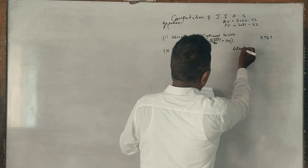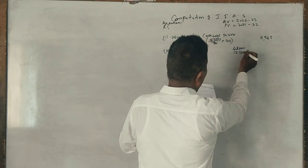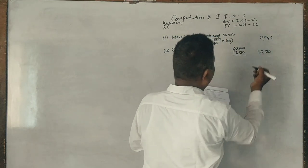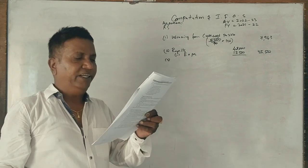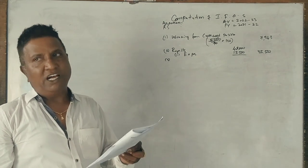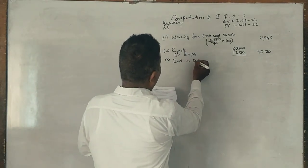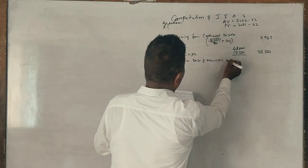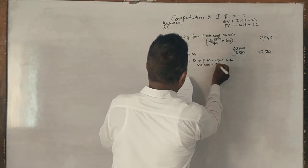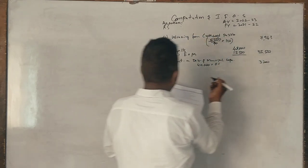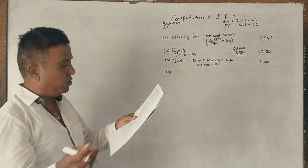Next, 8% interest on 40,000 municipal debentures, non-government amount. Interest on debentures of municipal corporation is 40,000 into 8% equals 3,200. Next point, 10% interest on 80,000 Karnataka State Government loan.